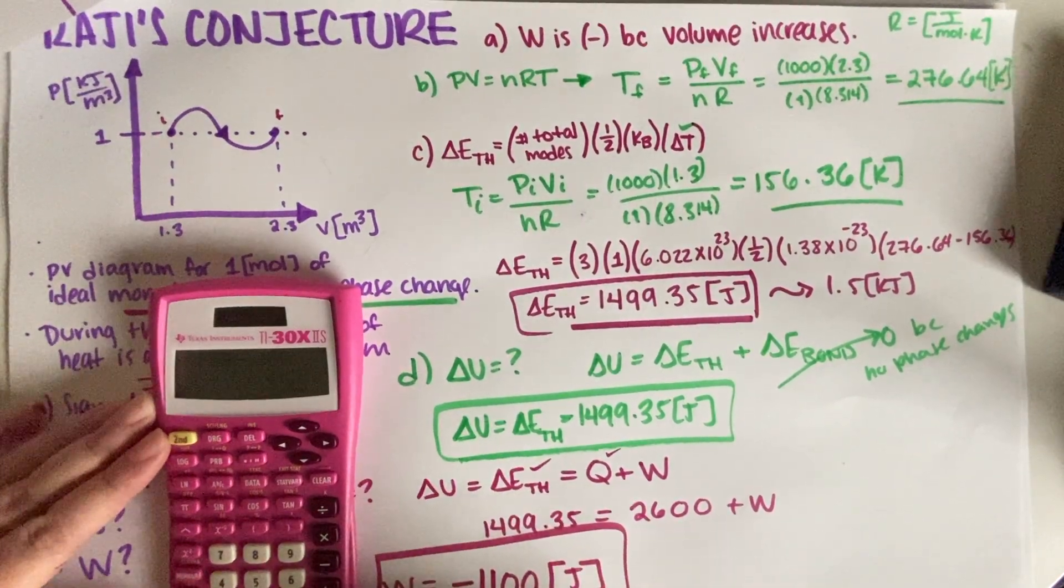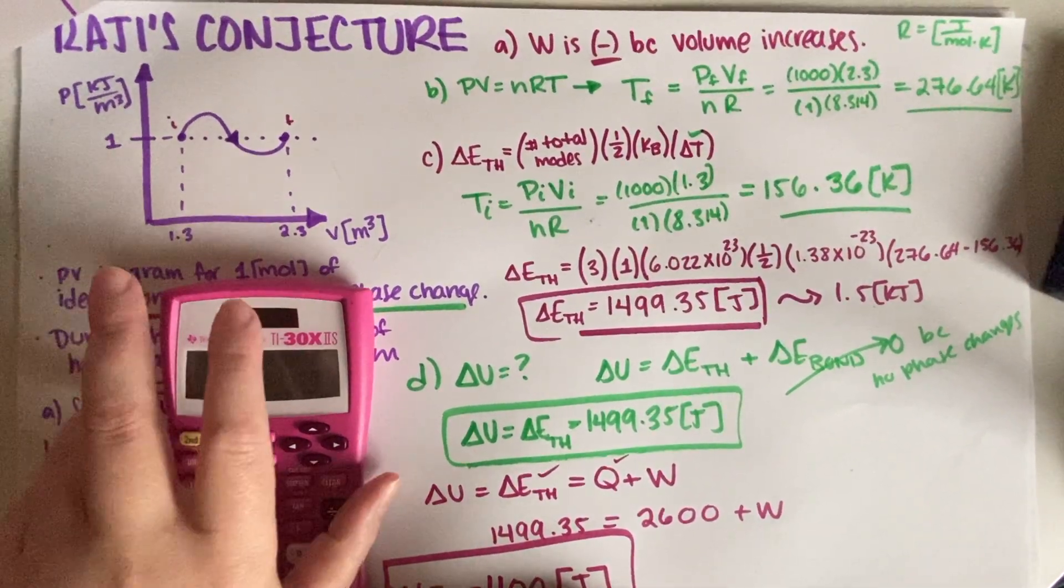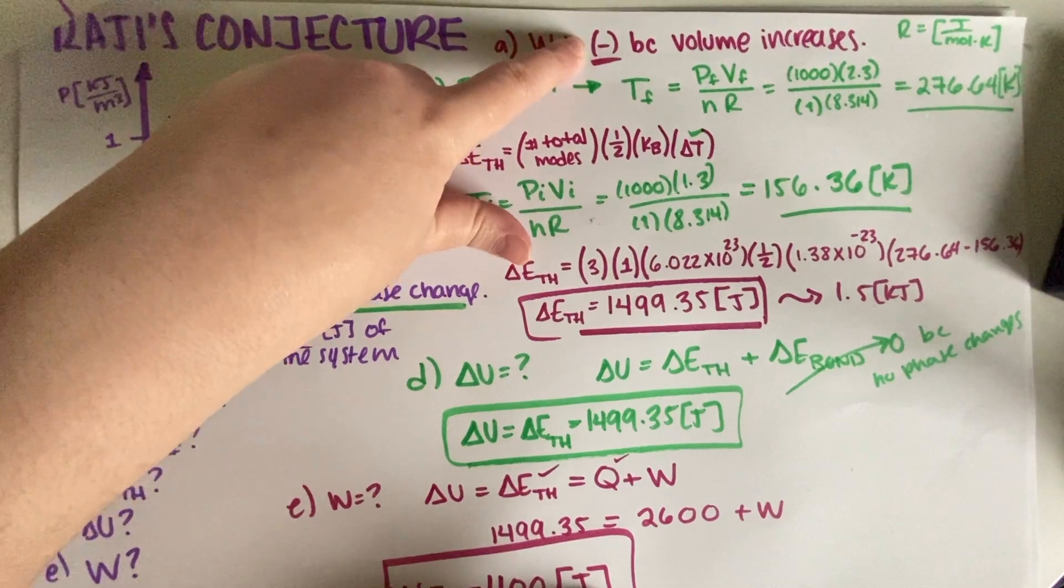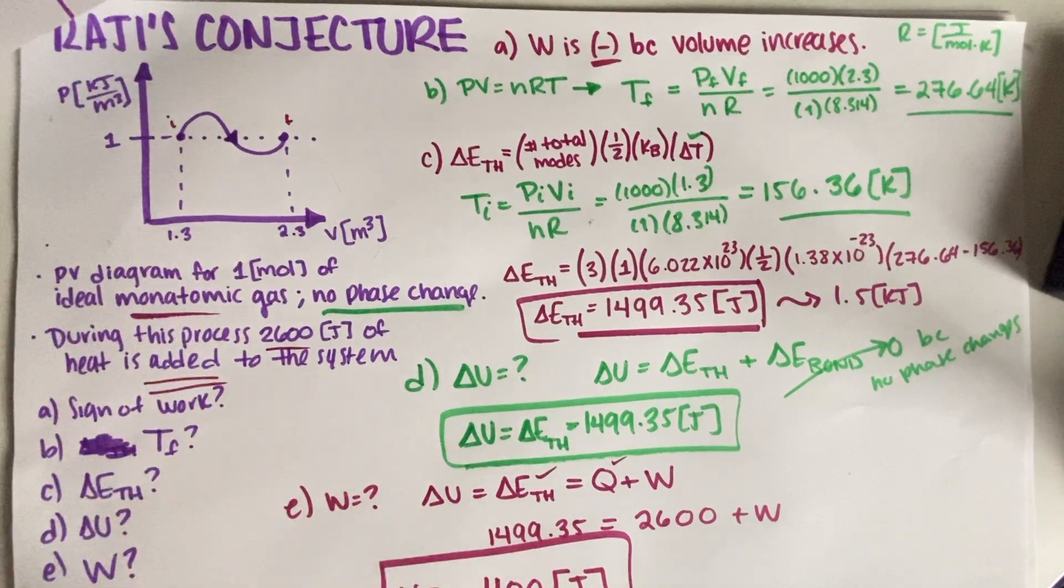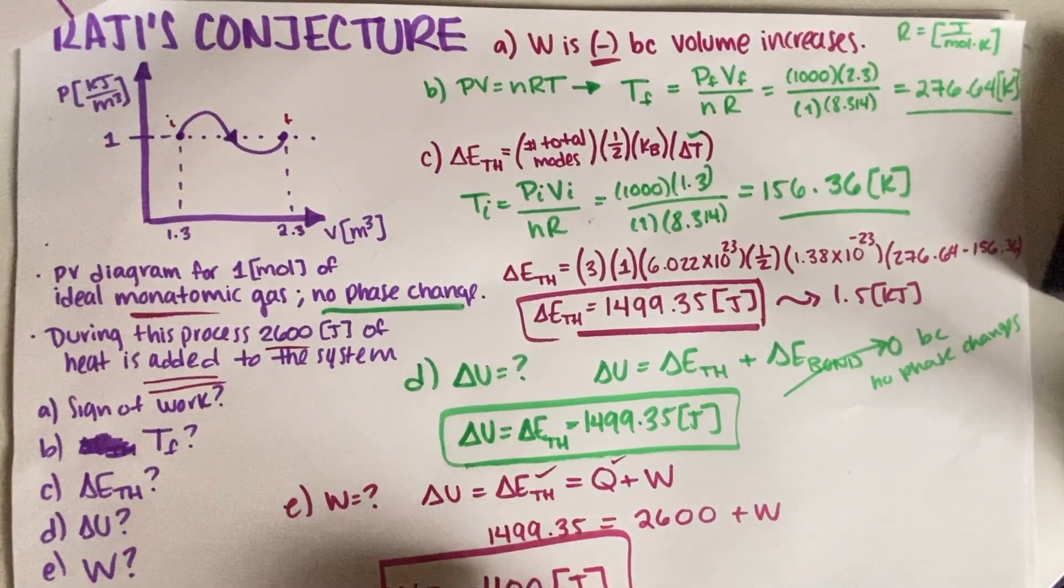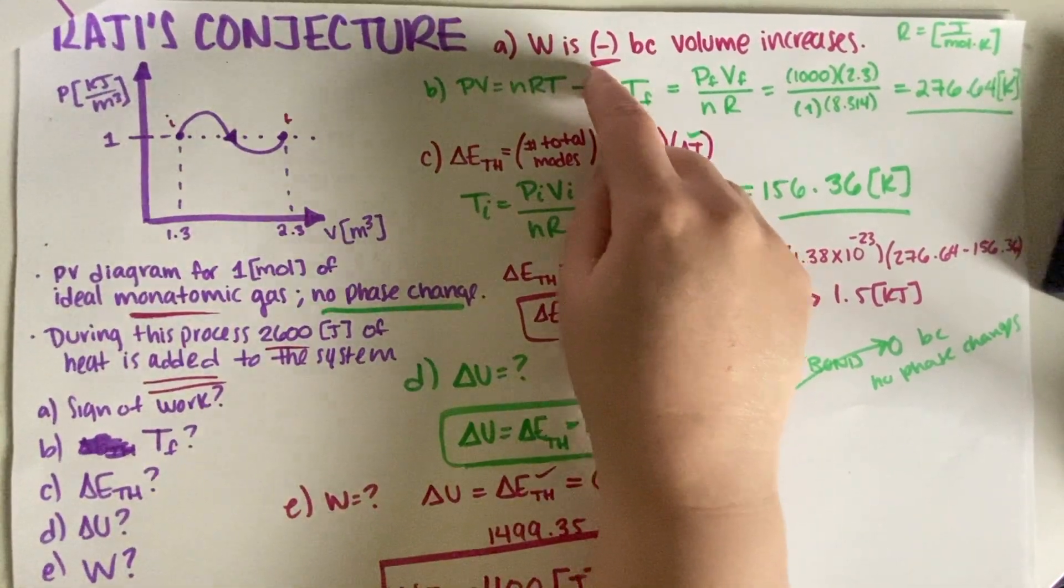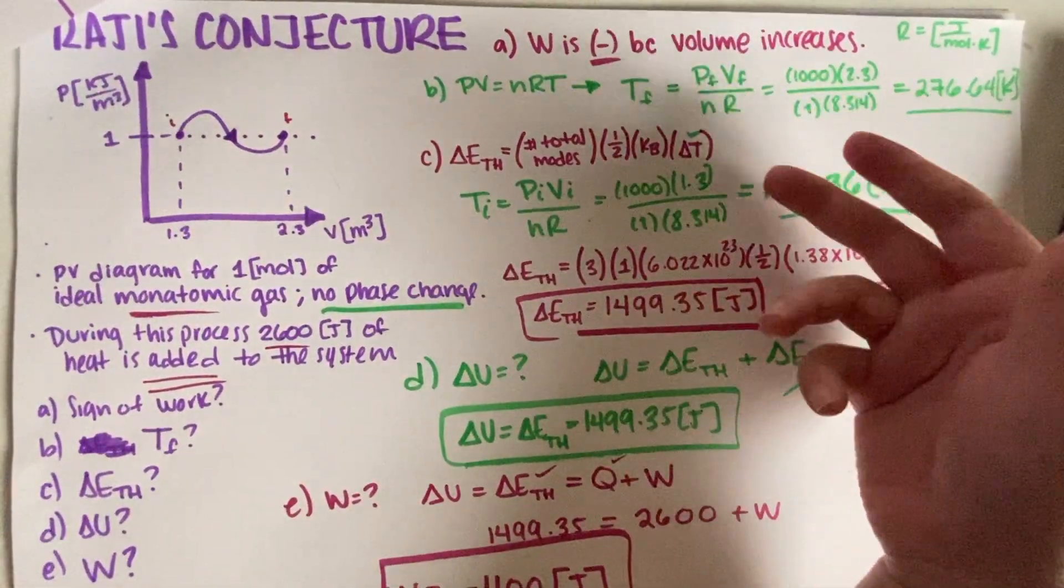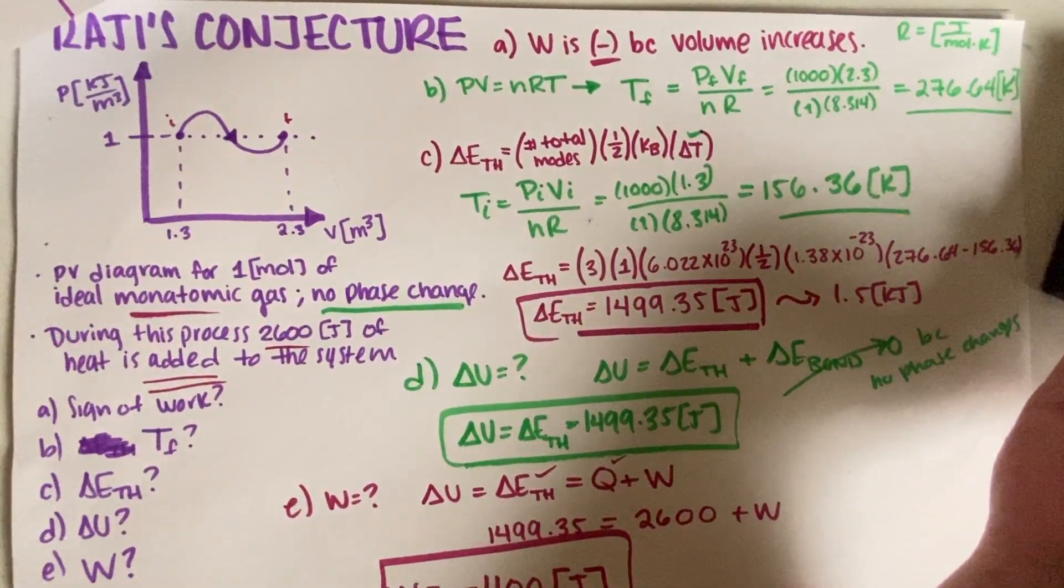Is it negative as we expected? Yes, it's negative as we expected. So we knew that it was going to be a negative number, since, part A over here. And that is something that you can use. Like, even if you don't know that added to the system means positive, if you had done negative here, and then your final answer is a positive, but that contradicts this, then you know something is wrong, right? Like, you have to go back and make sure that everything, you know, matches.